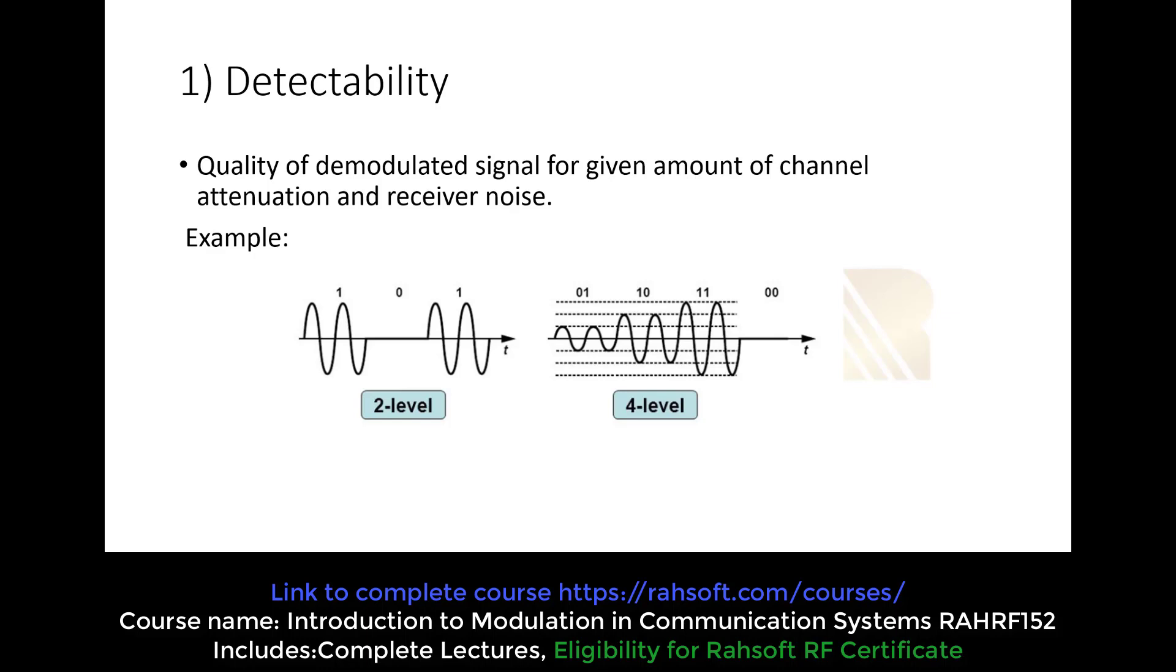As you see on the left side we have a modulation. This is the ASK modulation. We are going to talk about this in upcoming sections, but for now we use this to understand the concept of detectability. At the left side we have two levels. We are going to send the cosine wave for data 1 and for data 0.